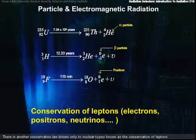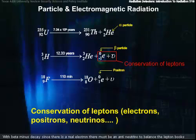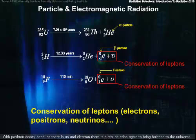There's another conservation law known only to nuclear types, known as the conservation of leptons. Electrons, positrons, neutrinos, among other particles, fall into this lepton class. With beta-minus decay, since there's a real electron, there must be an anti-neutrino to balance the lepton books. With positron decay, because there is an anti-electron, there is a real neutrino, again, to bring balance to the universe.